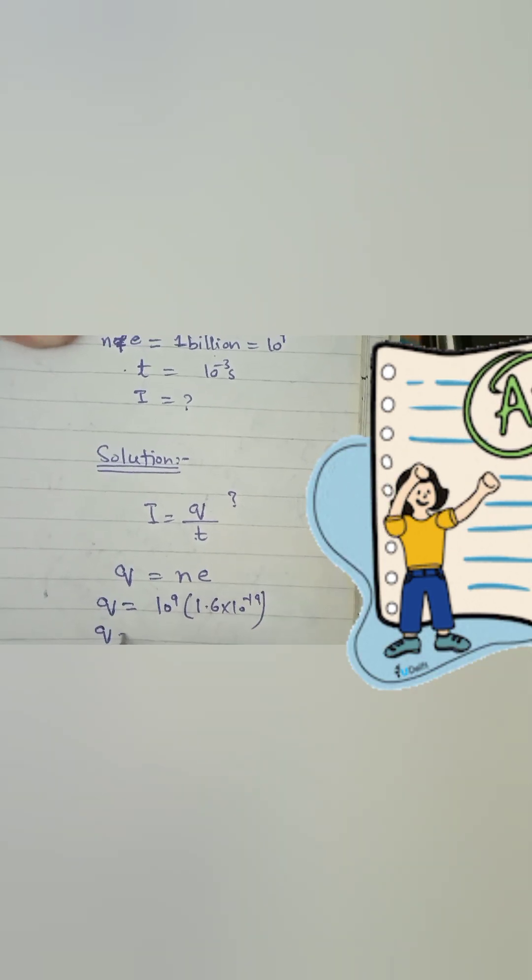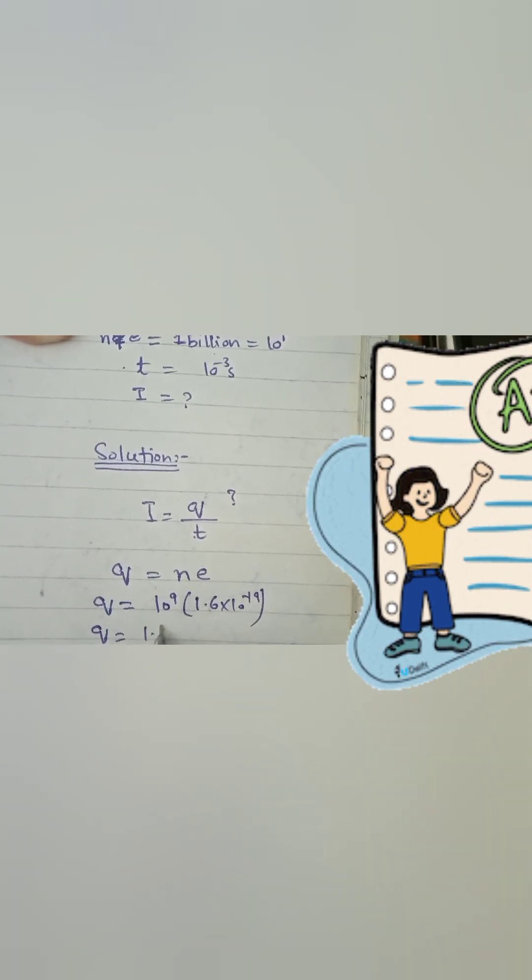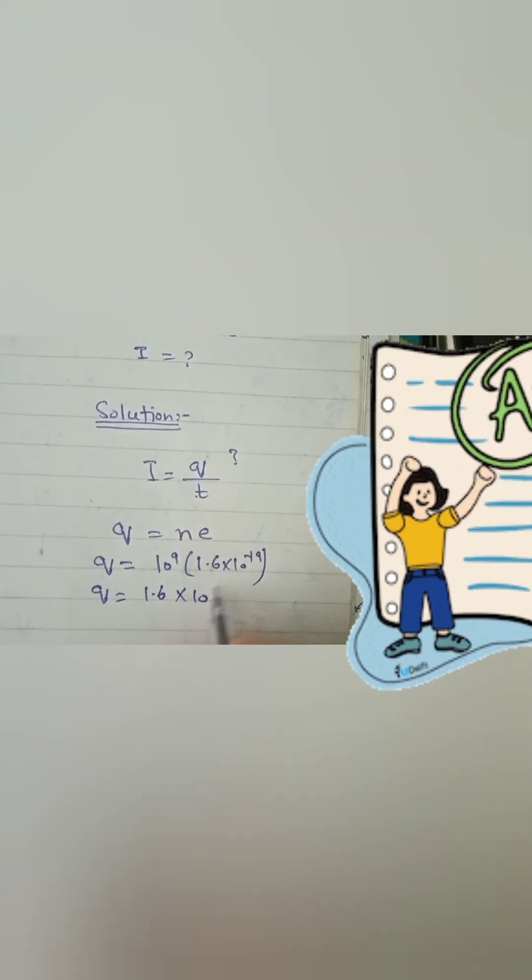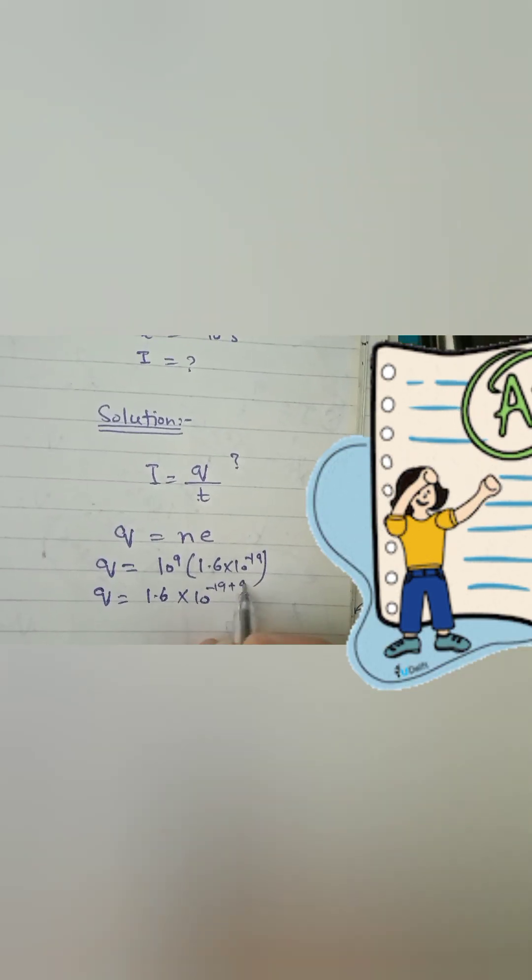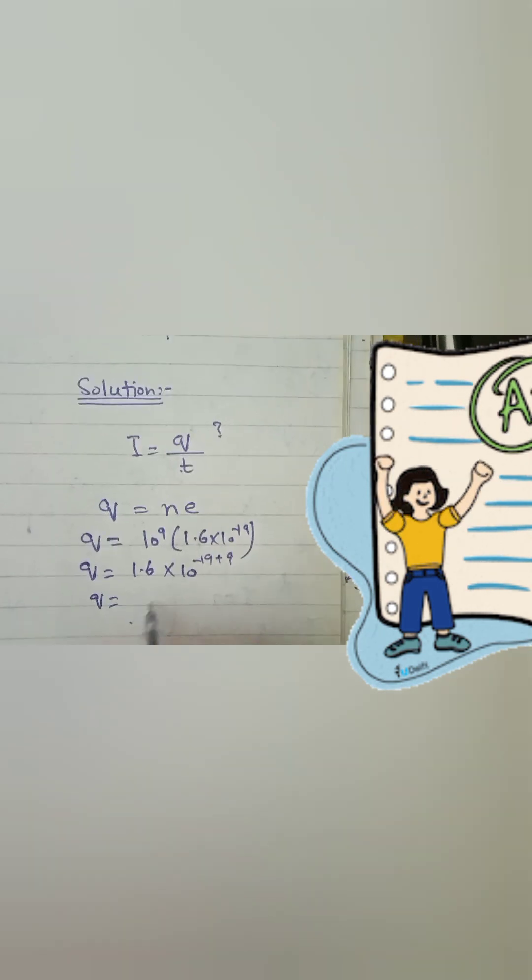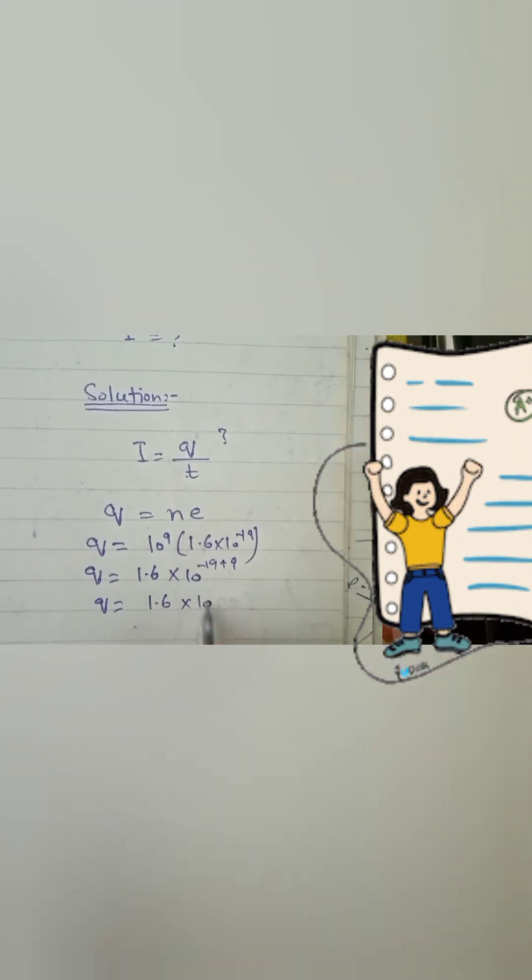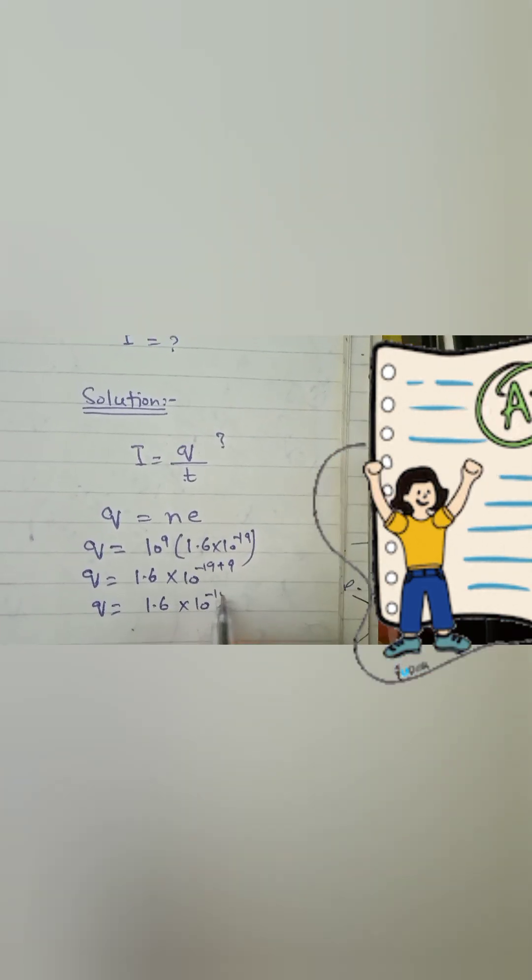So we can obtain charge as 1.6 into 10 raised to the power minus 19 plus 9. What do we get? 1.6 into 10 raised to the power minus 10.